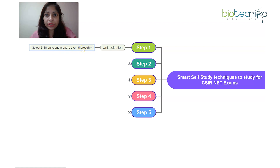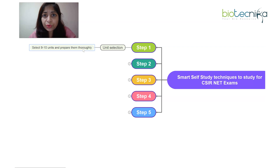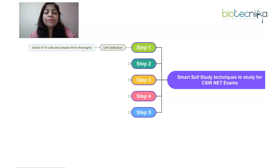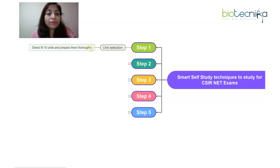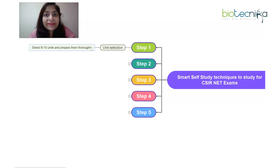Prepare those selected units thoroughly — by thoroughly I mean that any question asked from those sections you should be able to answer, and then you will qualify JRF. You don't have to prepare all 13 units, but at the same time the units you are selecting should be the important units. This is very important.